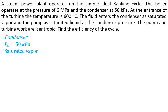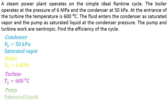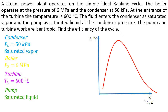The given information is the following. At the condenser, the pressure is 50 kPa and the fluid is saturated vapor. At the boiler, the pressure is 6 MPa. At the turbine, the temperature is 600 Celsius. And at the pump, the fluid is saturated liquid. This information is enough to draw our diagram.